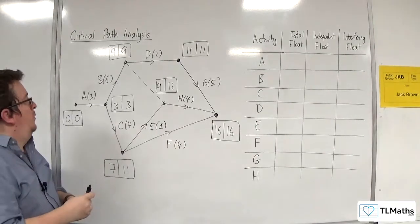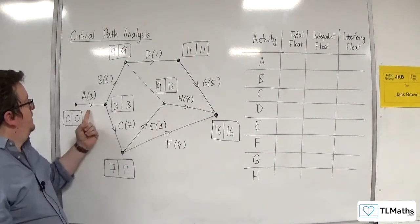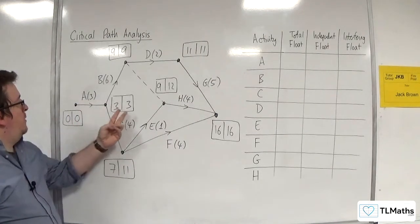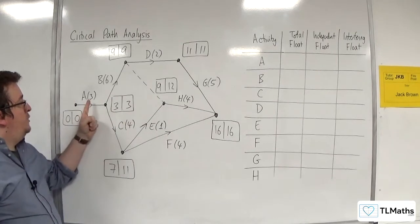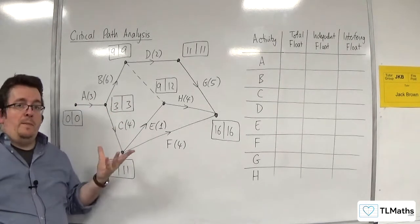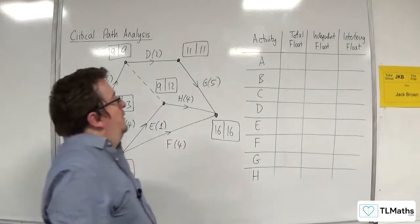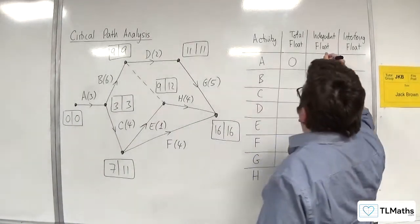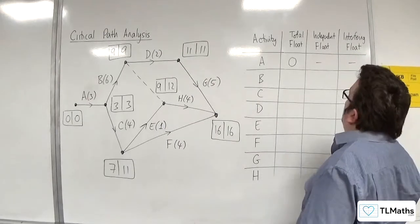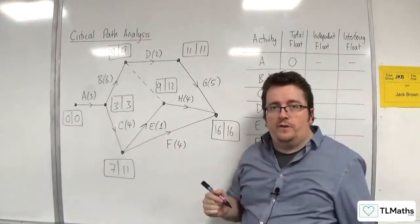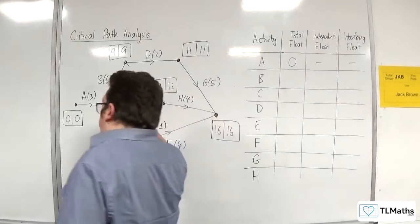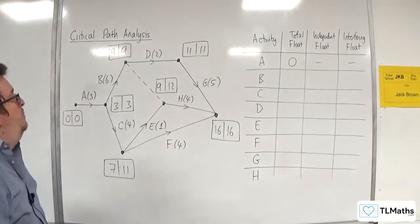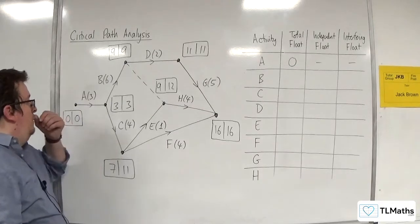First of all, activity A. As you can see, we've got 0, 0 and 3, 3, and the duration is 3. So 0 plus 3 is 3, which means that A is critical. So the total float is going to be 0. We don't even need to consider if there's any independent float or interfering float, so I'm just going to put dashes for those. If you put 0, that would be fine also.